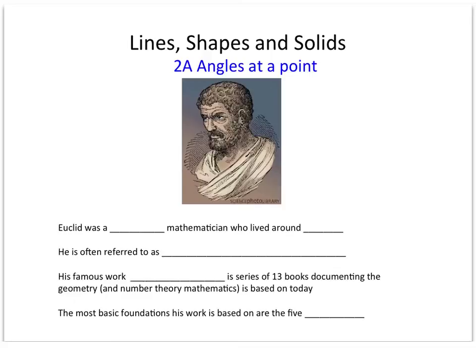Before we get started, we're going to be introduced to someone who is really important in the world of mathematics and that is the Greek mathematician Euclid. Euclid lived around 300 BC in Alexandria in Egypt and he's often referred to as the father of geometry because of his famous work called The Elements, which was a series of 13 books that documents the geometry and number theory we use today in mathematics.